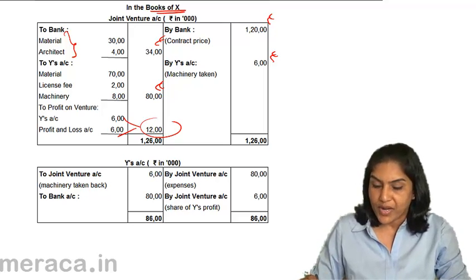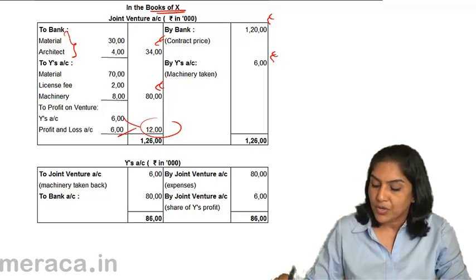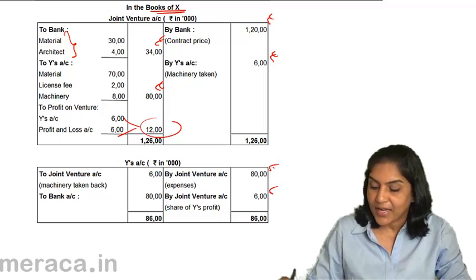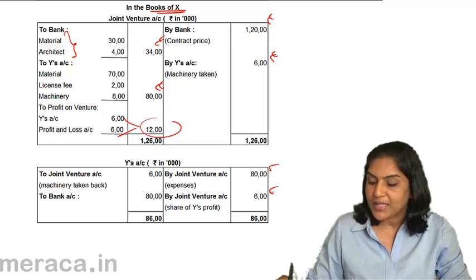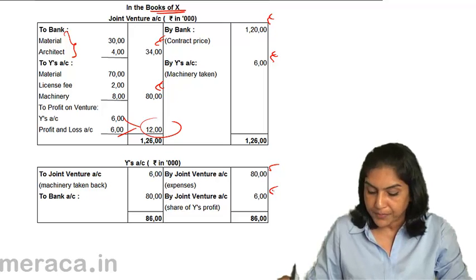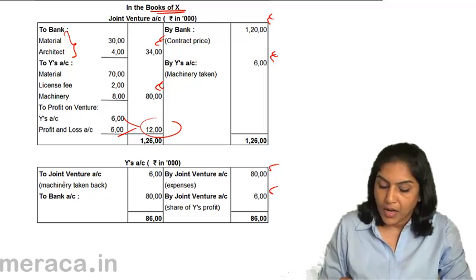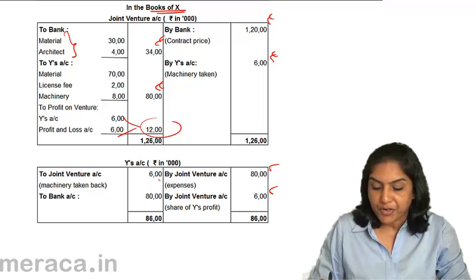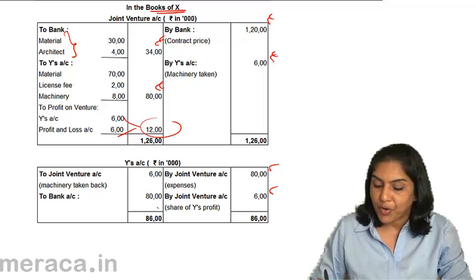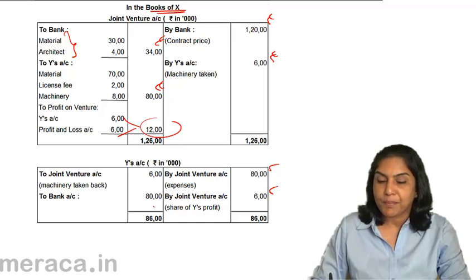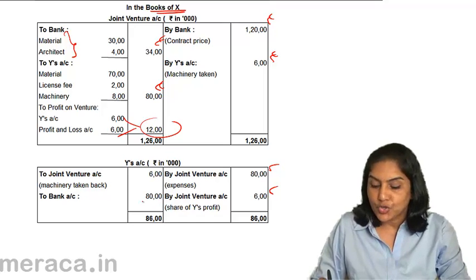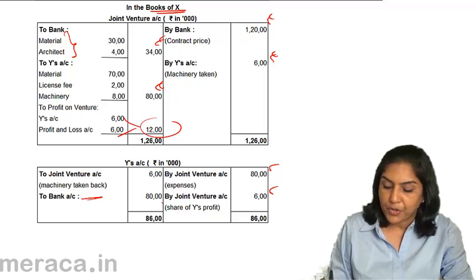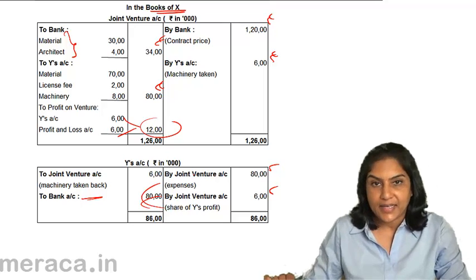In Y's account: 80 lakhs is Y's expenses and 6 lakhs is Y's share of profit — totalling credits of 86 lakhs. Y also took over machinery for 6 lakhs, so the debit is 6 lakhs. Therefore Y needs to be paid 80 lakhs net. Assuming payment is made: Y's Account debit to Bank, 80 lakhs.